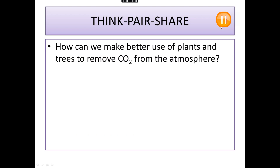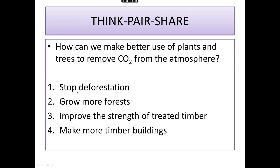Pause the video and think of a sentence: how can we make better use of plants and trees to remove carbon dioxide from the atmosphere? Because all too often we burn the wood as a fuel or we leave the tree to decompose. Here is my answer. Firstly, stop cutting down so many trees — stop deforestation, stop cutting down the rainforests. Grow more forests, grow more plants and trees. But crucially, instead of then using it as a fuel to burn it again, convert it to a building material. Make more timber buildings with improved treated timber, and that forms a more long-term store for the carbon.